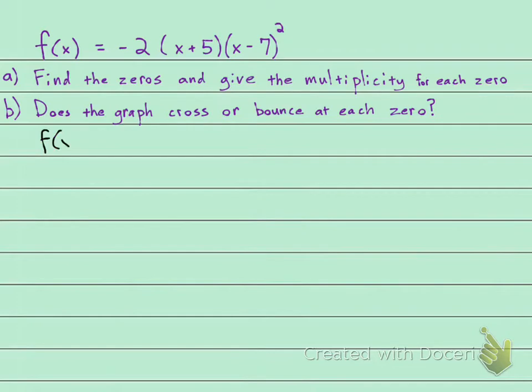What you need to do to find your zeros is say that your f of x equals zero. Now I'm going to rewrite this, negative 2, I'm going to write out x plus 5, and then I'm going to write both of these factors out twice: x minus 7 times x minus 7.